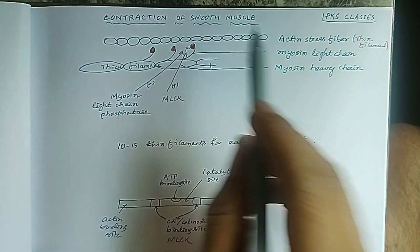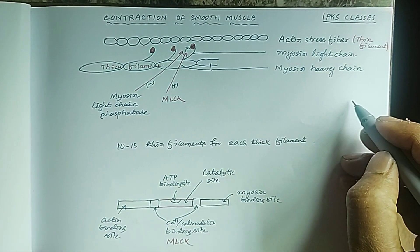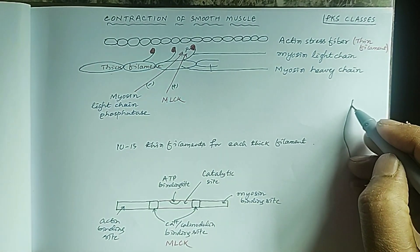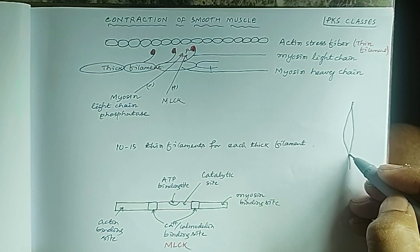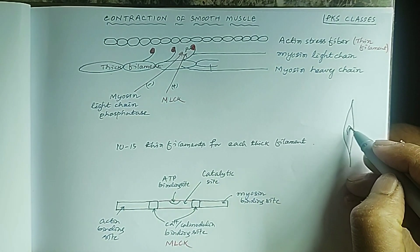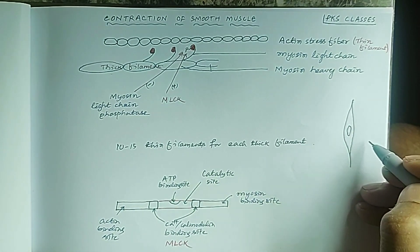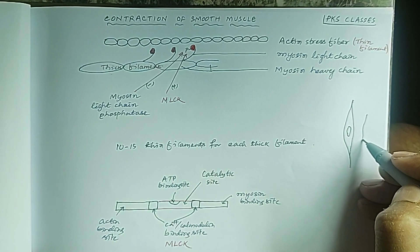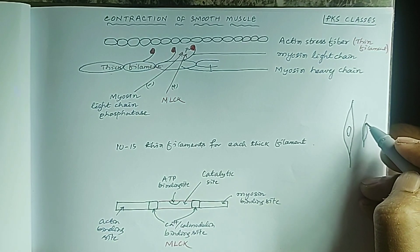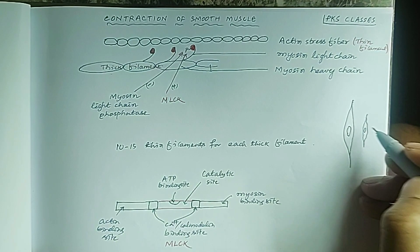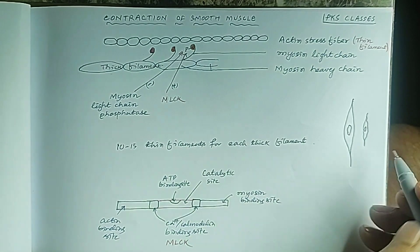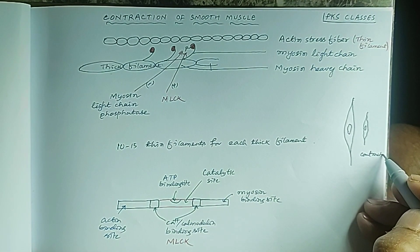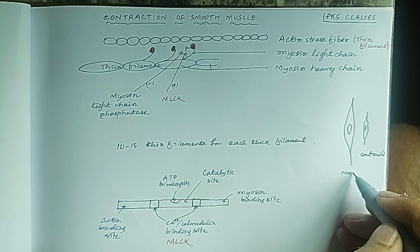The smooth muscle looks like this, with a nucleus visible. When it contracts it becomes shorter and wider. So this is the contracted smooth muscle compared to the normal smooth muscle.